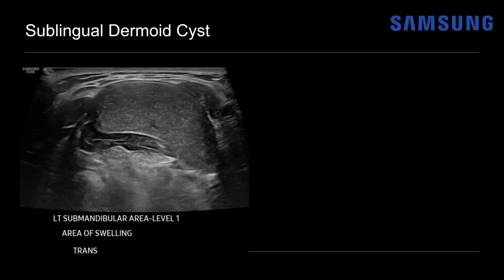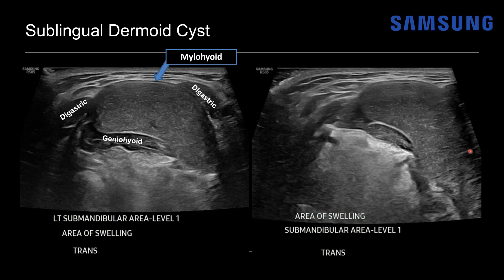On ultrasound of that same area in a transverse image, we can see the mylohyoid muscle as a thin hypoechoic muscle bounding this mass, which looks more heterogeneous than the previous dermoid cyst and has punctate echogenic foci throughout. The anterior belly of the digastric muscles seen on CT are visible here, as well as the geniohyoid muscle. Adjusting the transducer, we can see the mass is eccentric and deviated to the left. The geniohyoid and mylohyoid confirm we're in the sublingual space. The mylohyoid continues toward the adjacent hyoglossus muscle, whose anterior aspect protrudes into the posterior sublingual space — another important anatomic landmark.